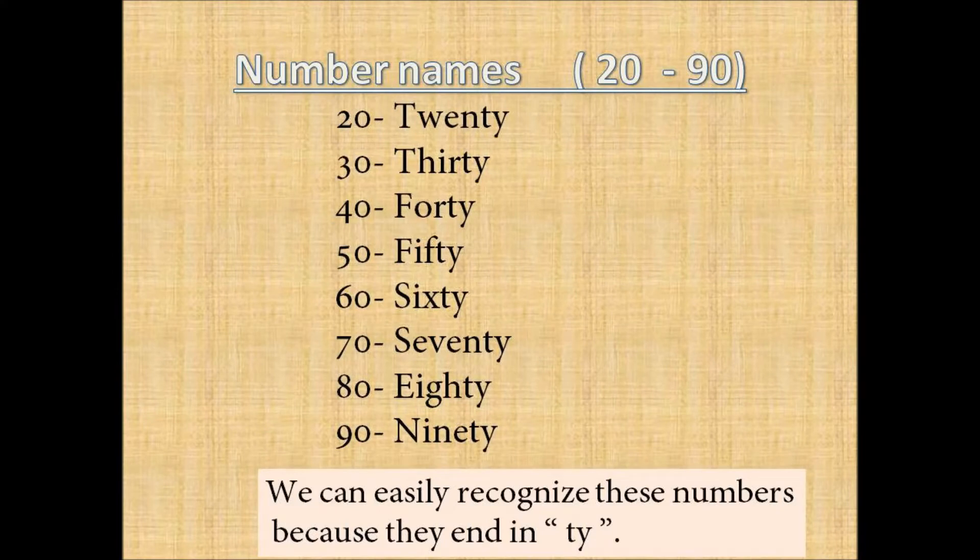Let us revise number names between 20 and 90 which end with 'ty'. Twenty (20), thirty (30), forty (40), fifty (50).